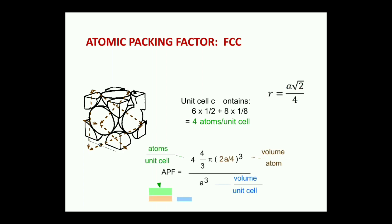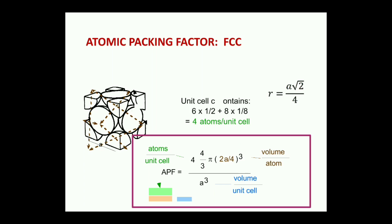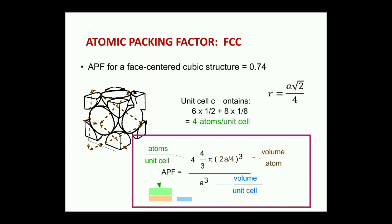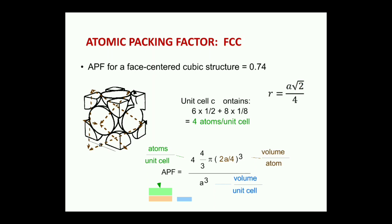For FCC, APF = 4 × (4/3 π r³) / a³. Substituting r = a√2/4 gives APF = 0.74. So 74 percent of the space is occupied in the FCC structure, and only 26 percent is vacant. The higher number of atoms present in the structure means it has good ductile properties.